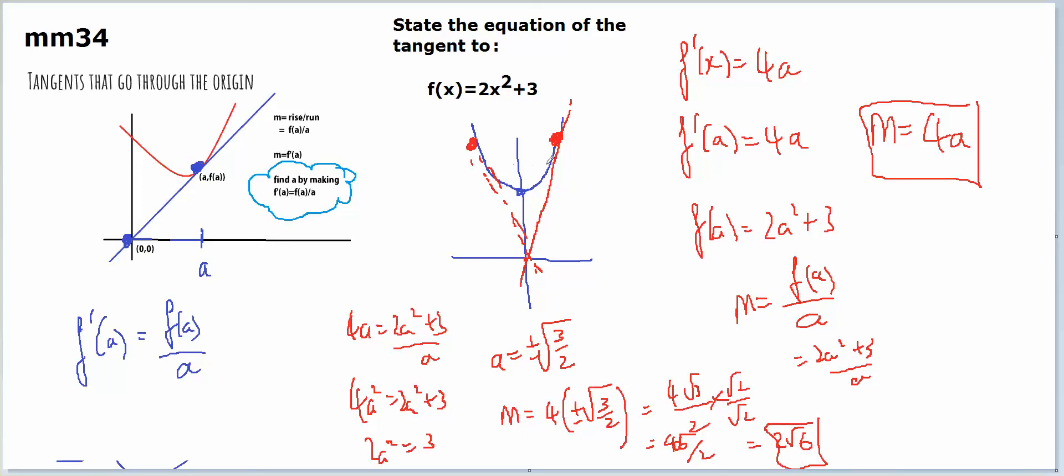So the gradient of this one is 2 root 6. The gradient of this one is minus 2 root 6. Both of them have y-intercepts of 0, therefore c will be 0. So my answers to the equations of the tangents are y equals 2 root 6x or y equals negative 2 root 6x.